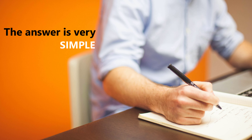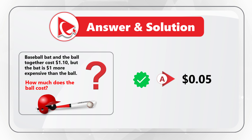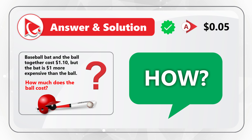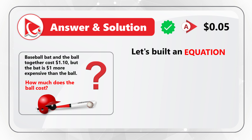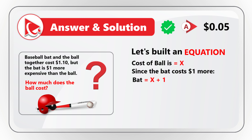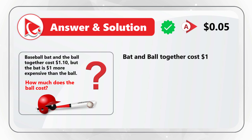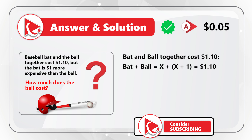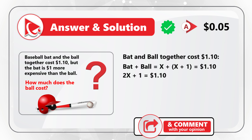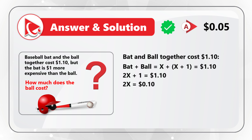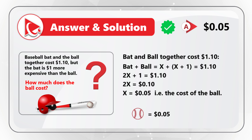The answer to this question is very simple but not obvious. The correct choice is A — the cost of the ball is $0.05. Let me teach you the magic trick behind this problem. Let's build a quick equation. The cost of a ball would be x. Since the bat costs $1 more, the cost of the bat would be x plus $1.00. Ball and bat together cost $1.10, so x plus (x plus 1) equals $1.10. This means 2x plus 1 equals $1.10, so 2x equals $0.10, and x equals $0.05.